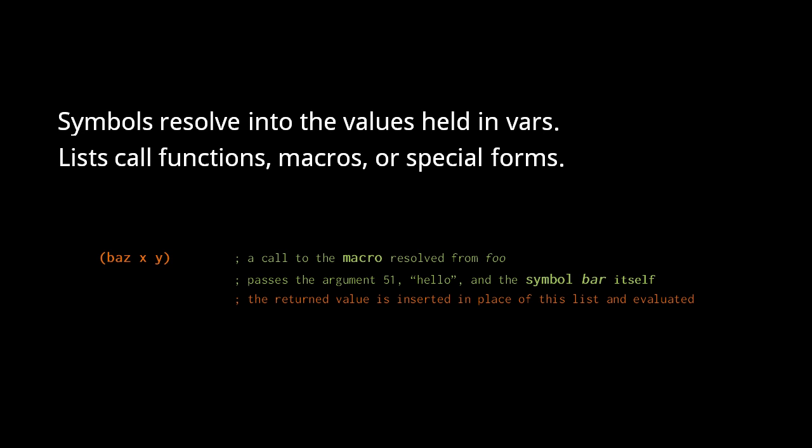When the symbol at the start of a list doesn't resolve to a var, before throwing an exception, the evaluator checks if it matches one of the 16 special form names. If so, the list is evaluated with the rules unique to that special form.